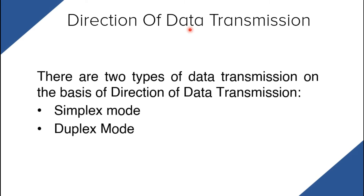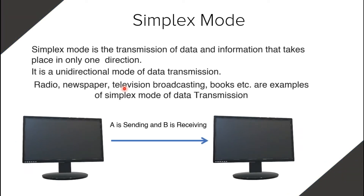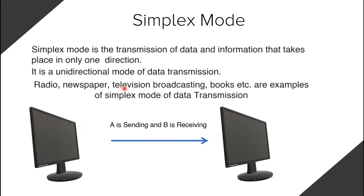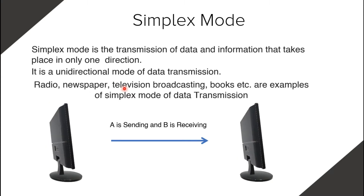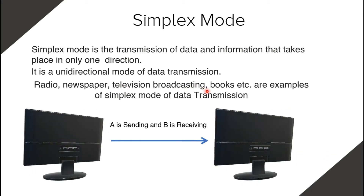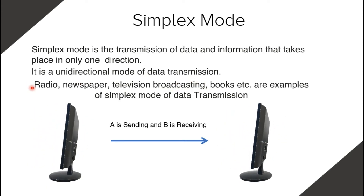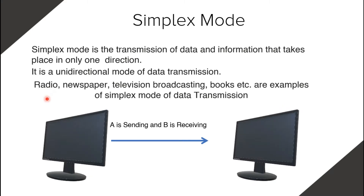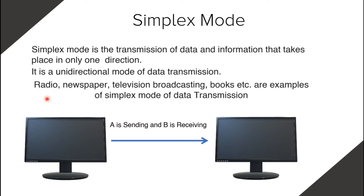There are two types based on direction: simplex mode and duplex mode. Simplex mode is the transmission of data that takes place only in one direction — it is a unidirectional mode. Radio, newspaper, television broadcasting, and books are examples of simplex mode. The data travels from sender to receiver, but the receiver cannot reply to the sender.